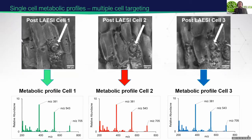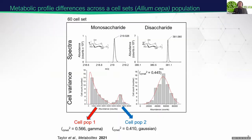If we ablate cells sequentially and individually, we're gaining metabolic profile spectra from each individual cell and can collect a series of metabolic profiles. We can assign structures to each peak we're detecting, corresponding to metabolites, and then compare the variance of metabolites across this large cell set population. This is the optically driven single cell analysis approach. This is a paper we published just this year, looking at high throughput single cell analysis of allium cepa epidermal cells, examining two sugars over a 60-cell set.